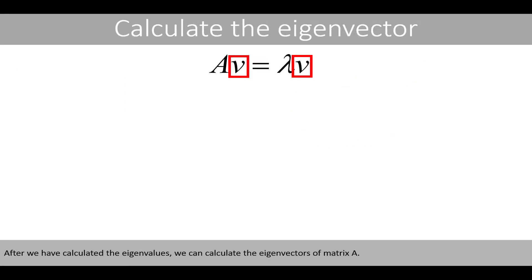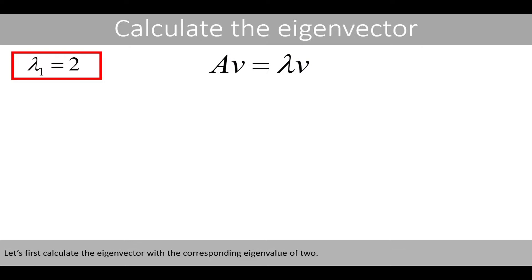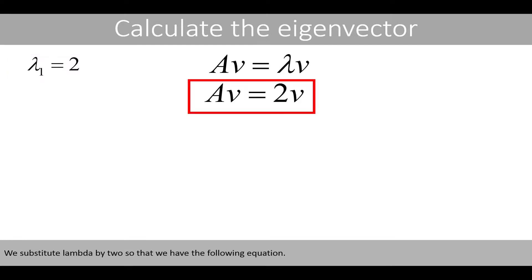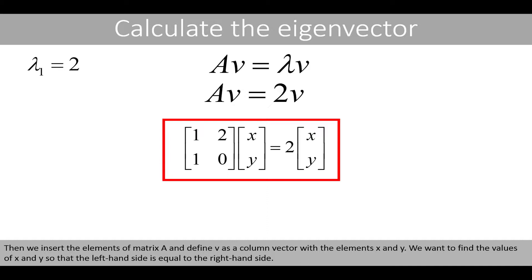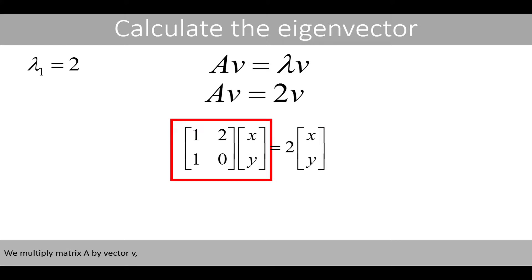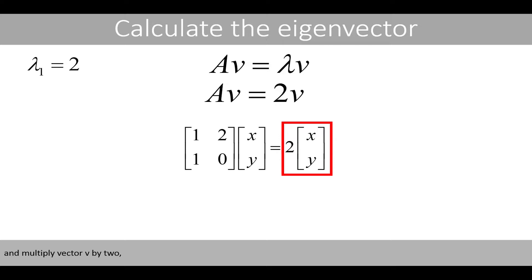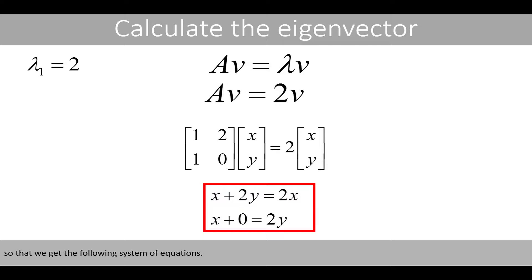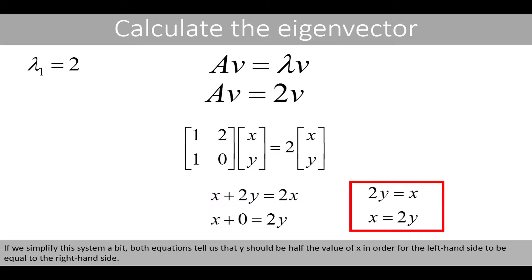After we have calculated the eigenvalues, we can calculate the eigenvectors of matrix A. Let's first calculate the eigenvector with the corresponding eigenvalue of two. We substitute lambda by two so that we have the following equation. Then we insert the elements of matrix A and define V as a column vector with the elements x and y. We want to find the values of x and y so that the left-hand side is equal to the right-hand side. We multiply matrix A by vector V and multiply vector V by 2, so that we get the following system of equations. If we simplify this system a bit, both equations tell us that y should be half the value of x.